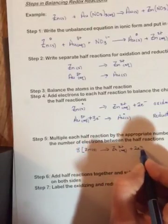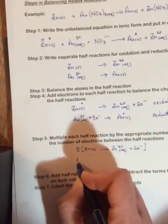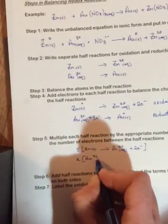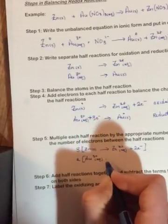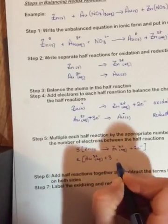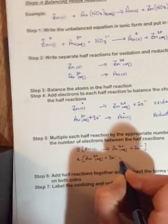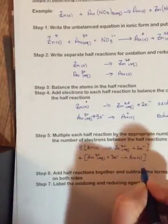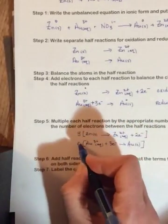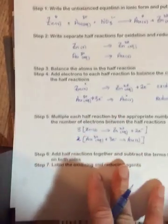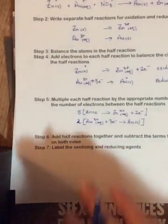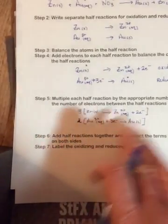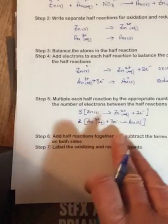And then it'll be two, square bracket, Au three positive aqueous plus three electrons going to Au solid. And that really is a two here. Then step six says add the half reactions together and subtract the terms that show up on each side. In other words, we can cancel out our electrons.